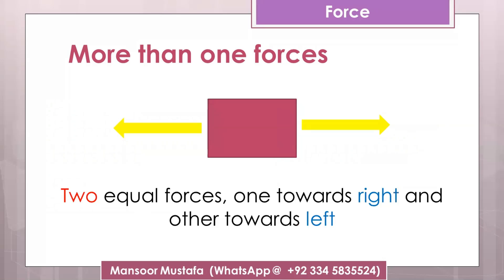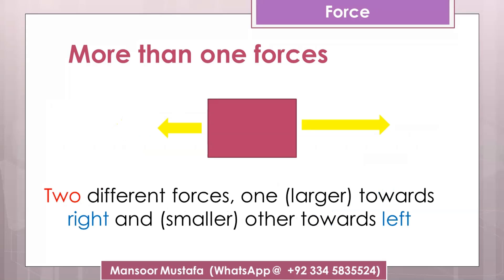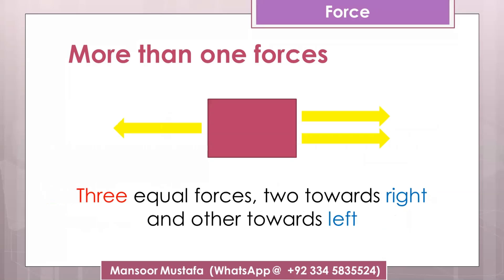Now consider one more example. There are two forces acting but they are acting in the opposite direction. Before we discussed that forces were acting in the same direction, but now on this object they are acting in the opposite direction. Again in this example, there are two forces acting in the opposite direction but with different magnitudes.